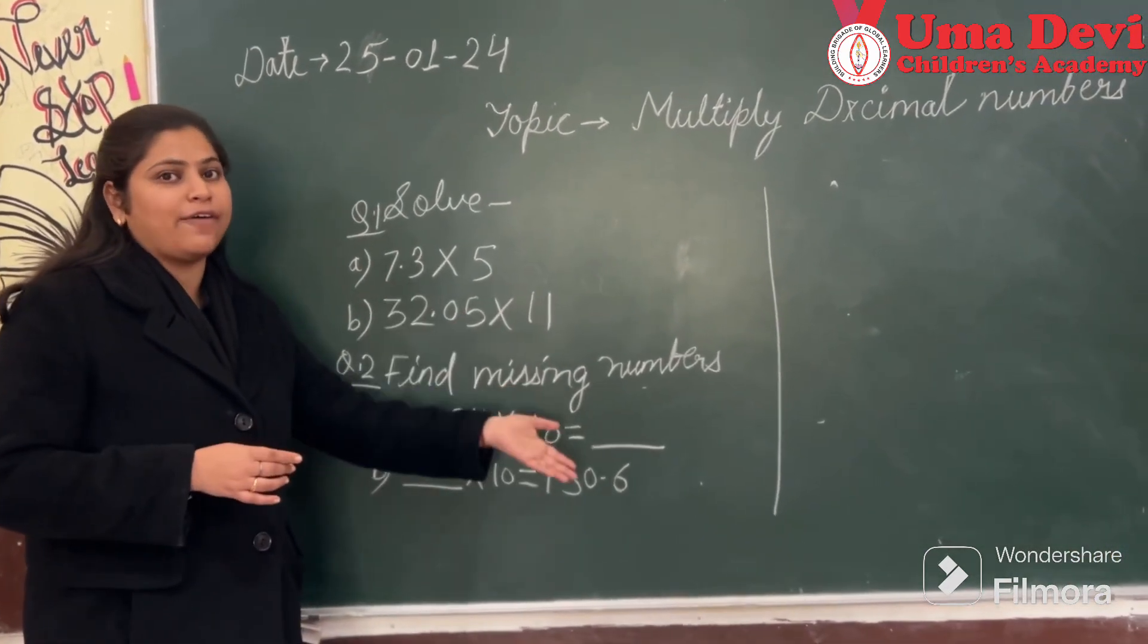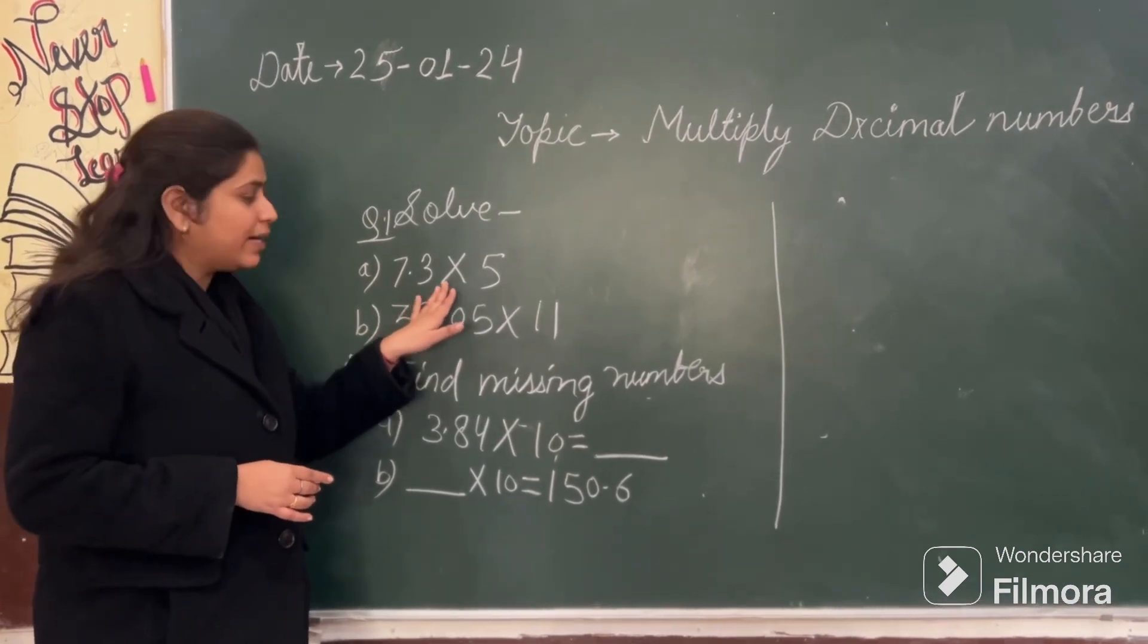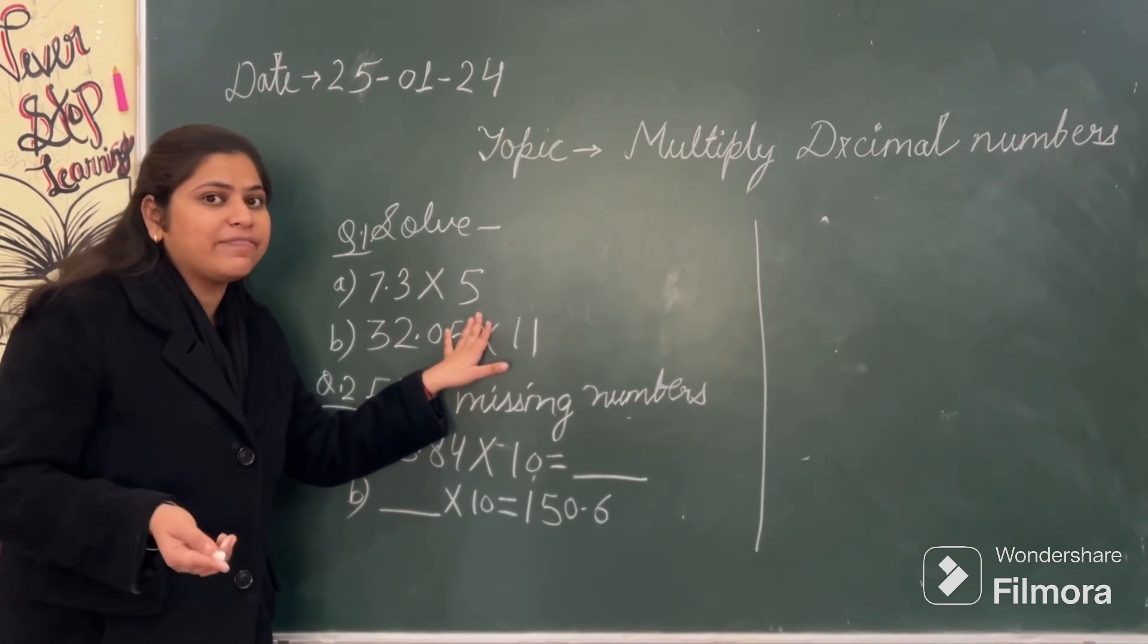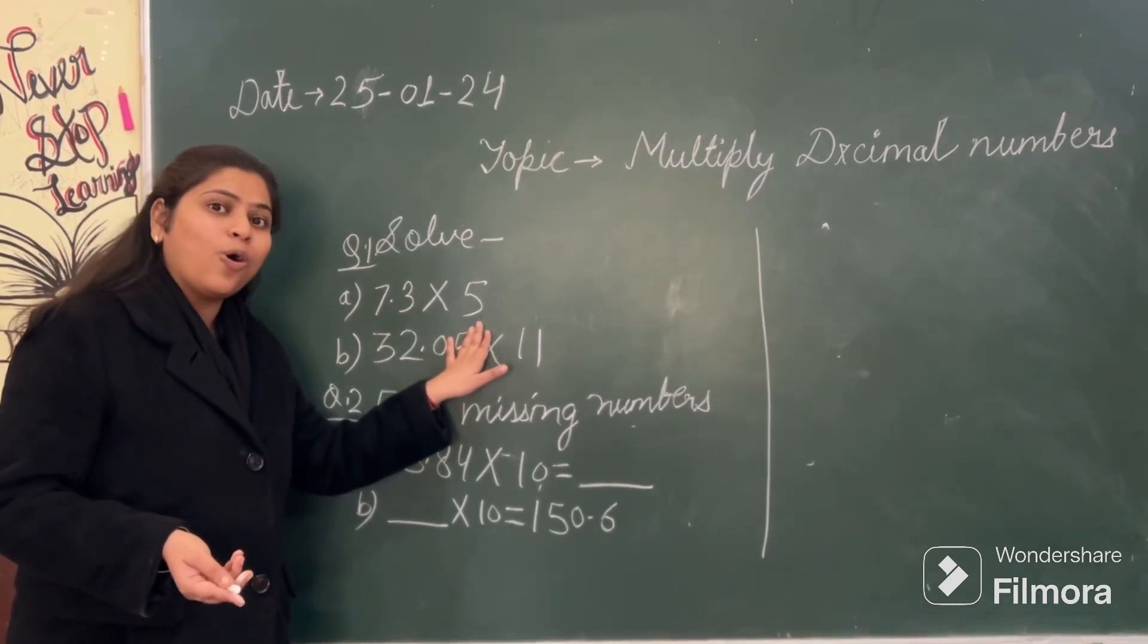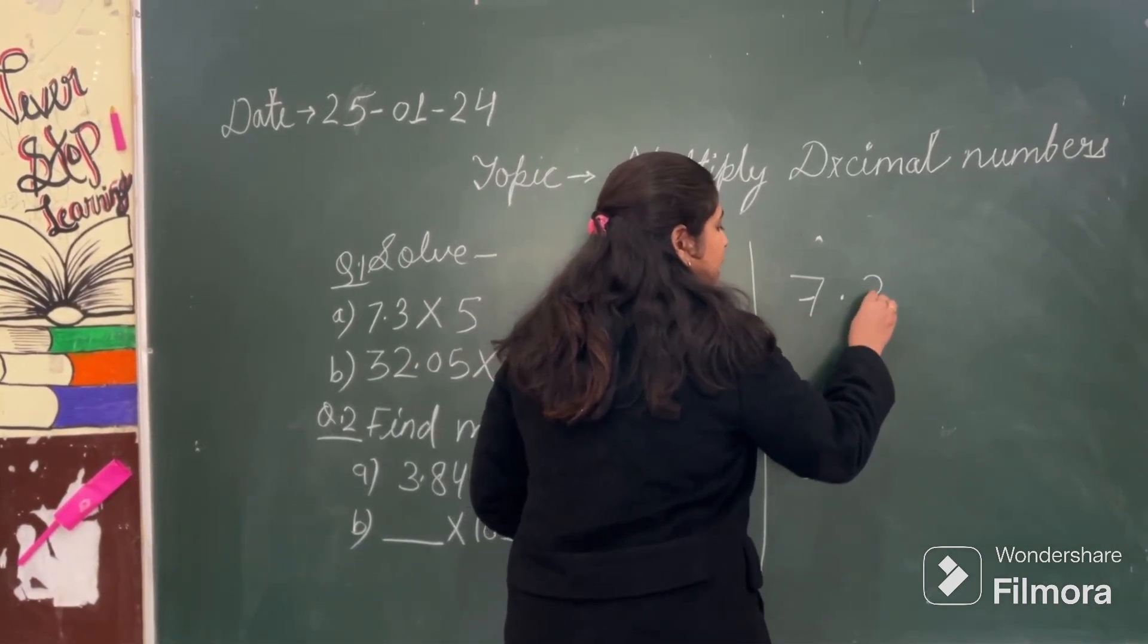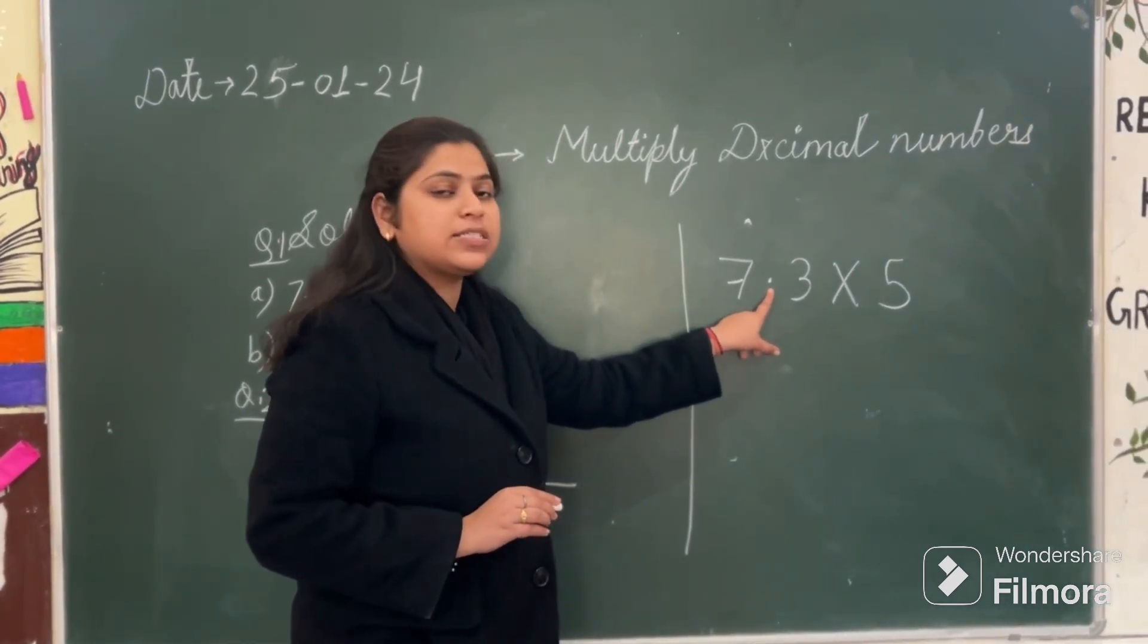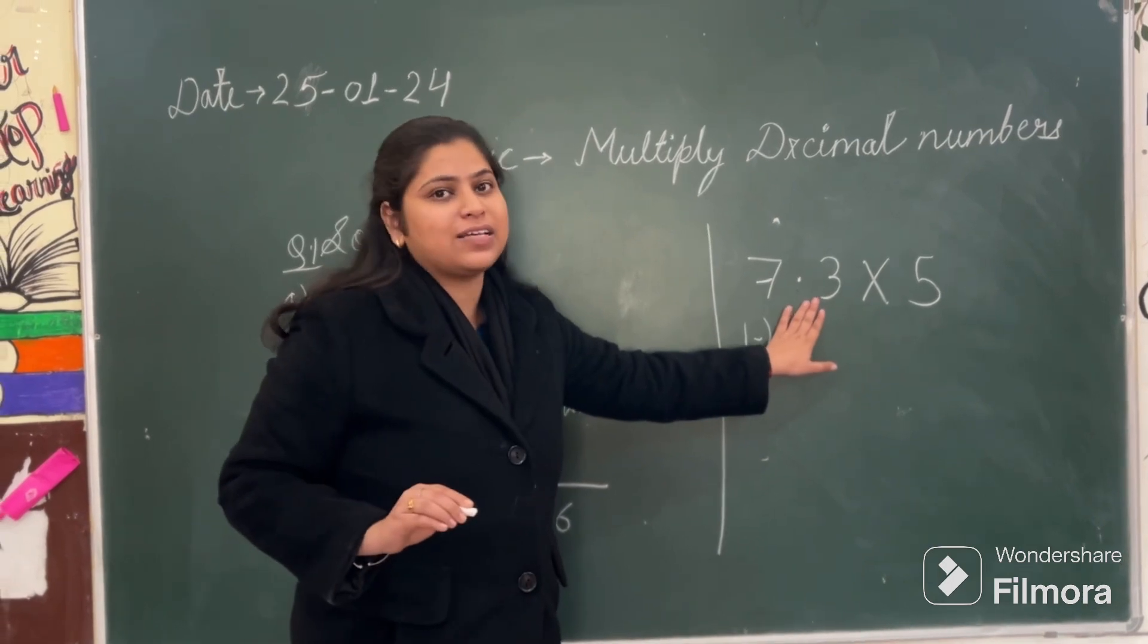And by these questions, we will understand how we have to multiply any decimal number. So the first question written here is 7.3 multiply by 5. So here students tell me 7.3 is what type of number? Decimal number. Great. And what about this 5? 5 is a natural number. Correct? So we are here multiplying our decimal number by a whole number or natural number. So let's see how to multiply. For multiplying this decimal number with a natural number, that is 7.3 multiply by 5, now you must be thinking what to do with this decimal point. Let me tell you step 1. What is step 1? That forget this decimal point.